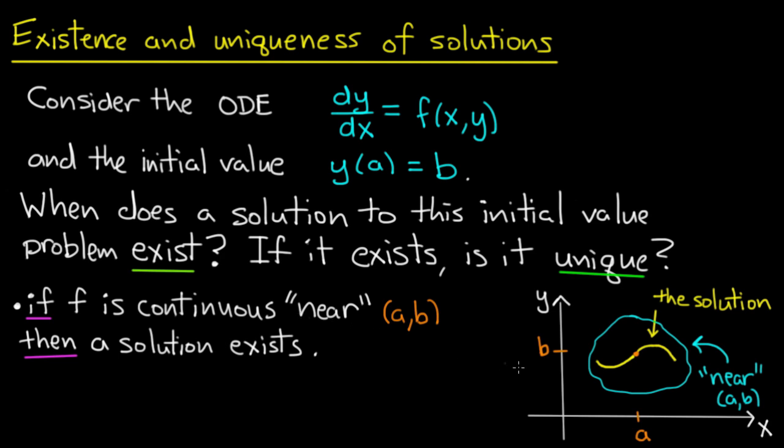What does this look like? Well, I have a point in the x-y plane. That's the point (a,b). So here it is right there, this little orange dot. Near (a,b) is some sort of area, some blob, some neighborhood around that point. And I need the function f to be continuous inside that blob.